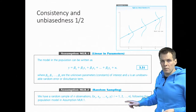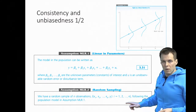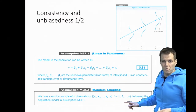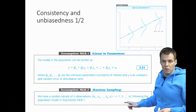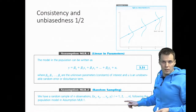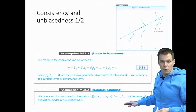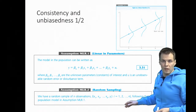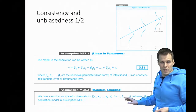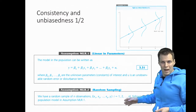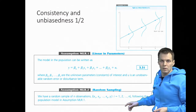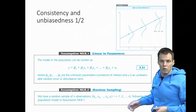The second assumption is random sampling, which means all observations are independent and each observation in the population has an equal probability of being selected into the sample. This is a feature of your research design and can't really be tested empirically in a direct way, though you can test certain aspects of it after estimation.